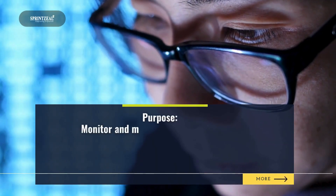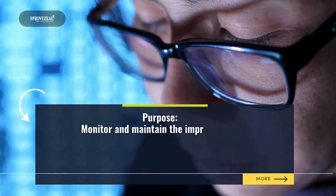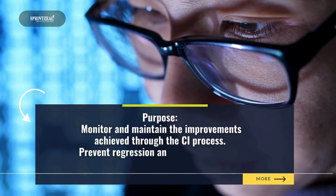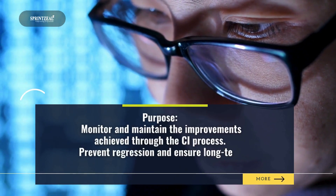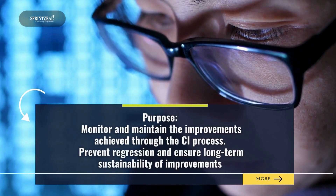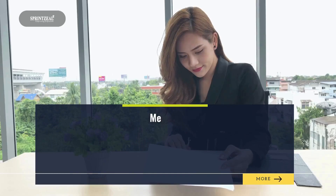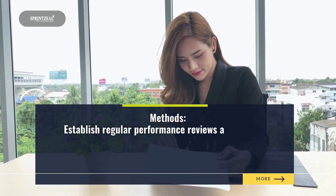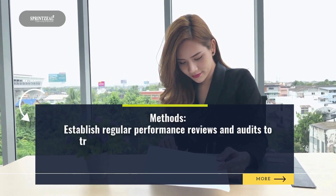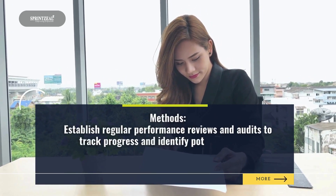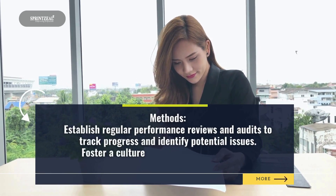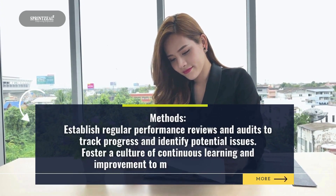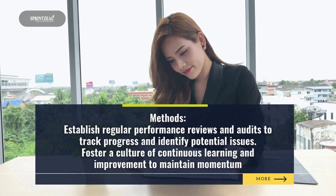The purpose of the Sustain stage is to monitor and maintain the improvements achieved through the CI process, and to prevent regression and ensure long-term sustainability of improvements. Methods include establishing regular performance reviews and audits to track progress and identify potential issues, and fostering a culture of continuous learning and improvement to maintain momentum.